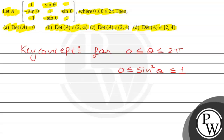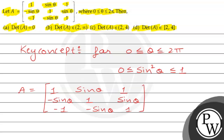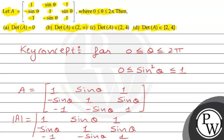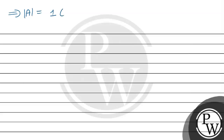Now we use this key concept to solve our question. We compute the determinant of matrix A. Expanding along the first row, we get: 1 times the minor from row 2, column 1 onwards, minus sin theta times its minor, plus 1 times its minor. This implies that determinant of matrix A equals the following expansion.